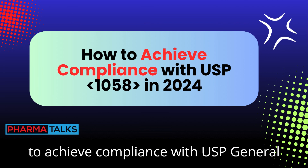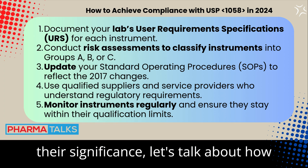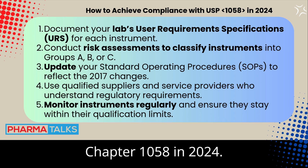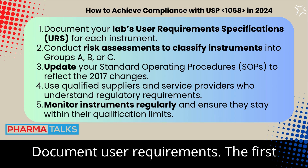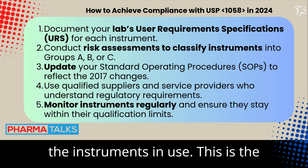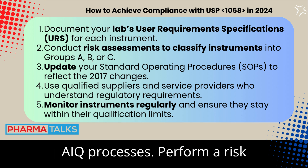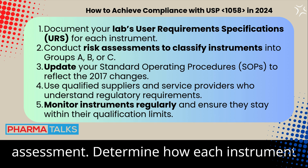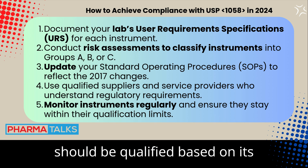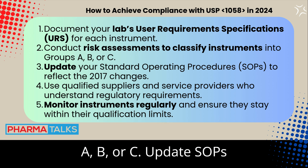Here's how to stay compliant with USP General Chapter 1058 in 2024. First, document user requirements — clearly document your lab's needs and the technical requirements of the instruments in use, as this is the foundation for your risk assessment and AIQ processes. Second, perform a risk assessment to determine how each instrument should be qualified based on its complexity and intended use, and use this to classify instruments into groups A, B, or C.